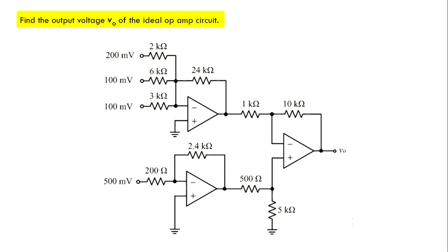In this problem we need to find out the output voltage V0 of this ideal op-amp circuit by considering op-amp 1, op-amp 2 and op-amp 3 as ideal. We need to find out what is the voltage V0.